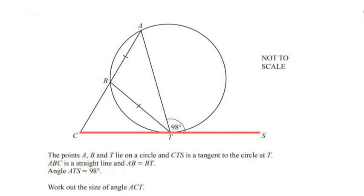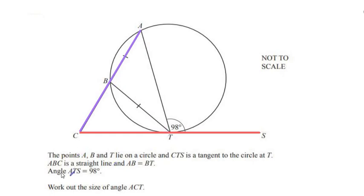ABC is a straight line — it is not a tangent, because this line has entered the circle, and a tangent can never enter the circle. AB is given equal to BT, so these two sides are the same. Angle ATS is given as 98 degrees. We need to work out the size of angle ACT.